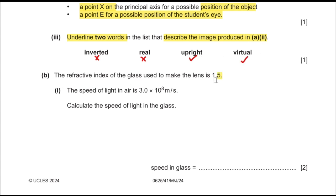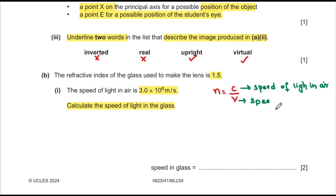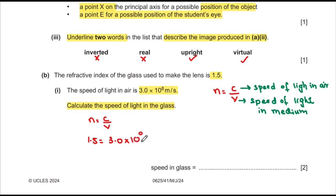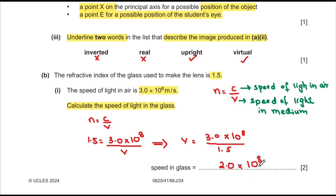Part B: the refractive index of glass is 1.5 and the speed of light in air is 3 × 10⁸ m/s. Calculate the speed of light in the glass. Refractive index = speed of light in air / speed of light in medium. So 1.5 = (3 × 10⁸) / v, rearranging gives v = 2 × 10⁸ m/s.